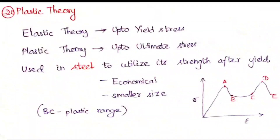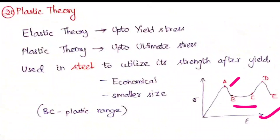We know that elastic theory is up to the yield stress only. I have drawn the stress-strain diagram here. At point A it will reach yield stress, then it will be declining at B. From B to C is the plastic range, where the behavior of steel will be plastic. C to D we call the strain hardening stage, and after that it will reach its ultimate stress. This is the actual stress-strain behavior of steel.